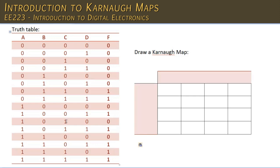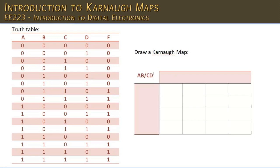To draw a Karnaugh map, we create a table that identifies the 16 cells. We label our rows and columns — calling this A, B, C, D — where we put the AB states down on the columns and we put the CD states across the rows.